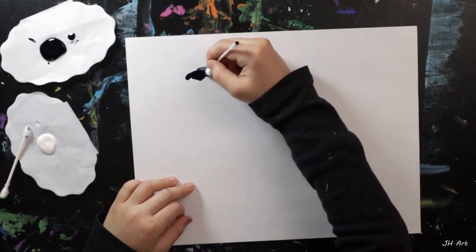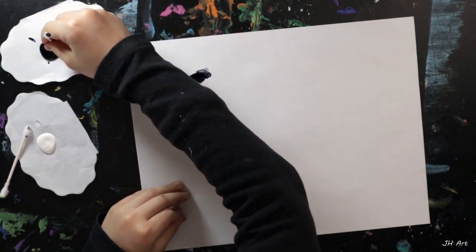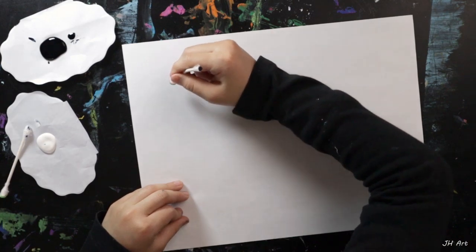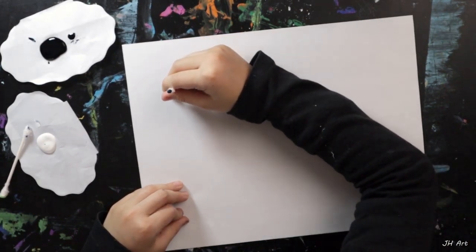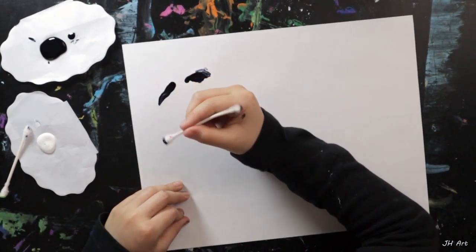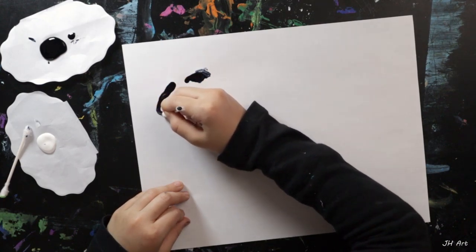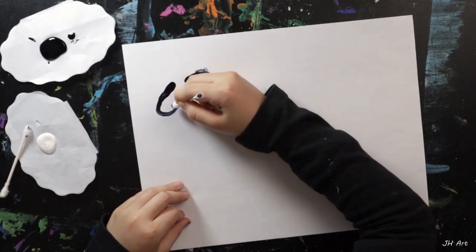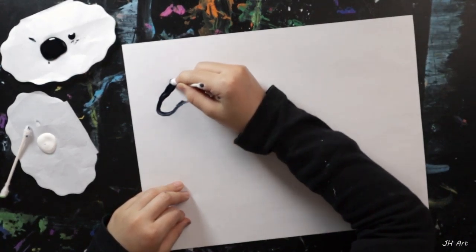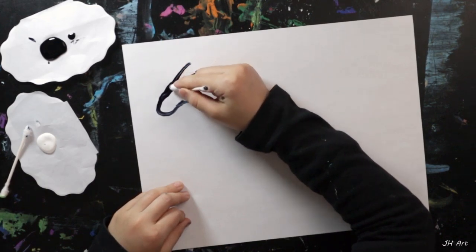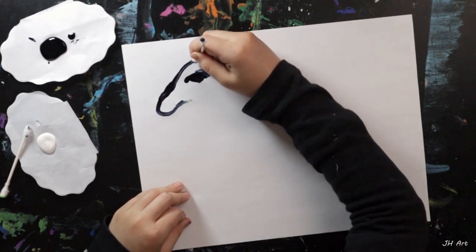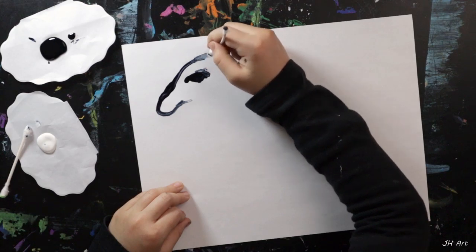Here the zebra's eye. Does the zebra have a super big eye? No. And the mouth and the hair. First we are going to do the ears.